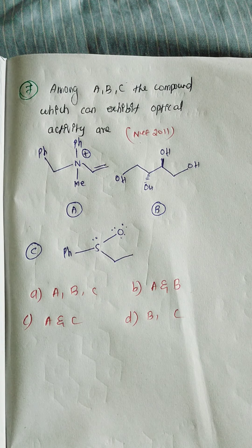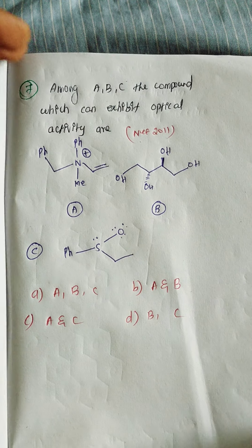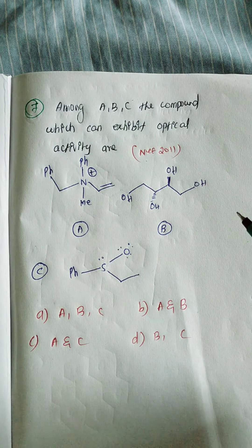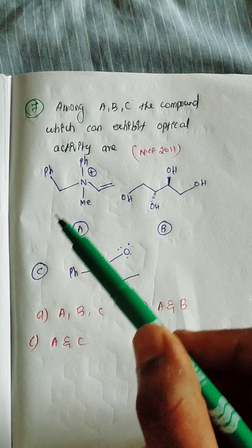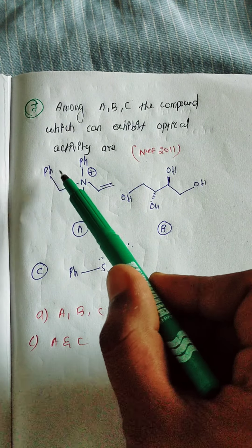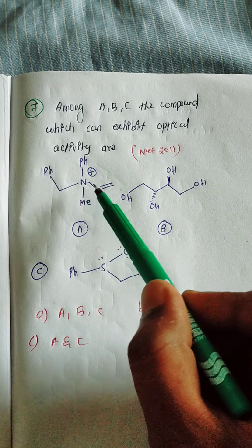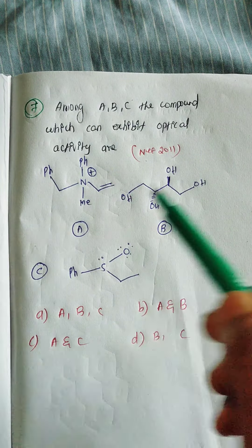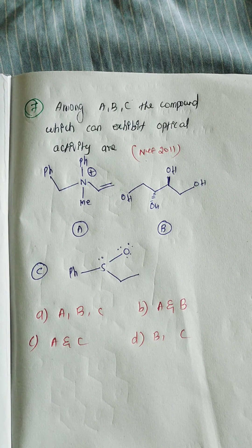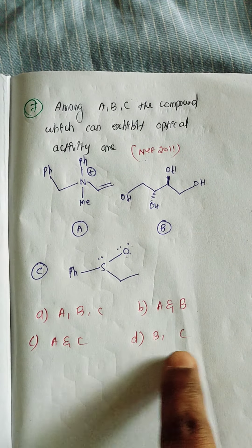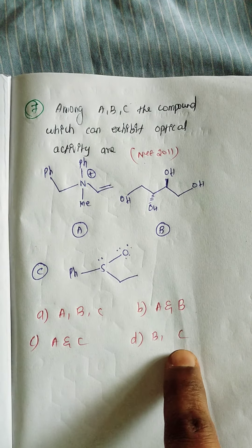In the first molecule A, nitrogen is attached to four different groups: 1, 2, 3, 4. So A is chiral. Therefore option D, which would exclude A, is not the answer.